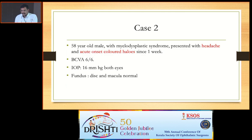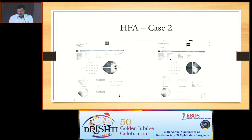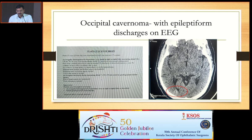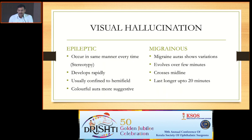The second case: a patient with headache and acute onset colored halos. His eyes were perfectly normal, but visual field examination showed a left homonymous hemianopia. Imaging revealed an occipital cavernoma on the right side with epileptic discharges. The colored halos were due to an occipital seizure ongoing for one week. As ophthalmologists, we should give importance to the symptom of colored halos. To distinguish seizure from migraine: if it occurs stereotypically every time, or very rapidly within seconds, or is confined to a hemifield, think seizure and investigate further.